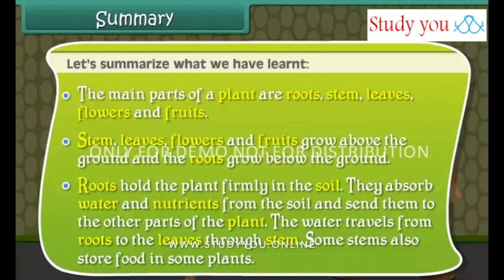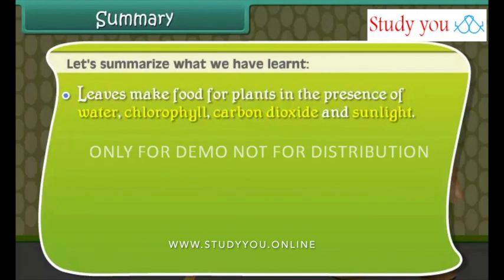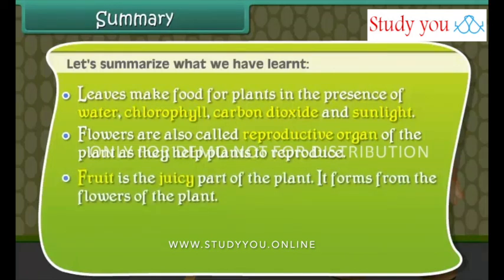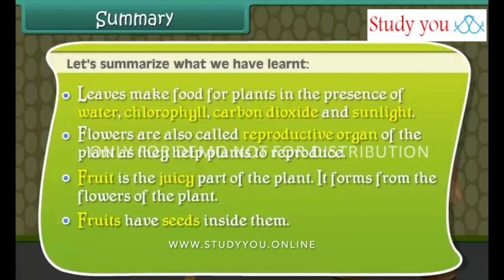Some stems also store food in certain plants. Leaves make food for plants in the presence of water, chlorophyll, carbon dioxide, and sunlight. Flowers are also called the reproductive organ of the plant, as they help plants to reproduce. Fruit is the juicy part of the plant, formed from the flowers, and fruits have seeds inside them.